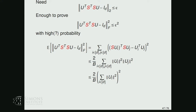At the end of the day, we get 2/B times the square of the Frobenius norm squared of U. Since every column of U has unit Euclidean norm, the Frobenius norm squared of U is D, so we get 2D²/B. This is a convenient form for the subsequent bound.